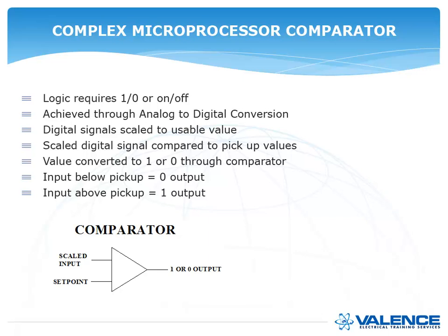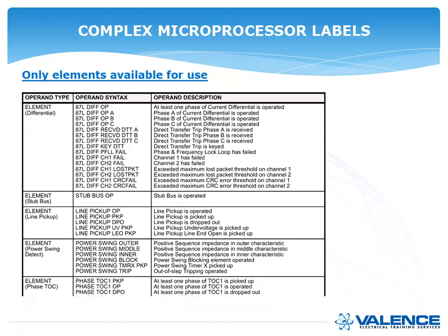So it's either on or off. That comparator will use a setting — in this case it's a GE 87 relay. If you wanted to look at the line pickup operation, that line pickup would be the set point in the comparator. You can see that GE relays use codes like 87L, stub bus op, line pickup, power swing, or phase TOC one pickup — those are all the things that you can choose in a GE relay.